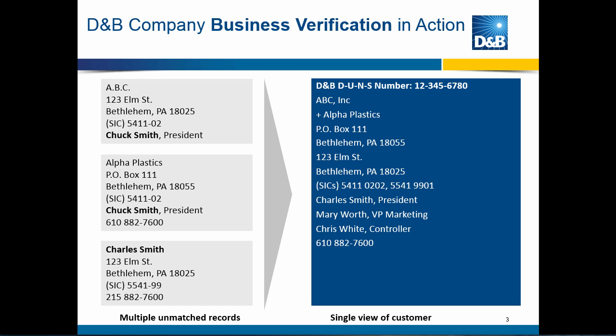If you're not familiar with D&B's offerings, the way business verification works is the analyst provides via Excel some portion of the information. There are some fields that are required — company name and a couple other things. And then the D&B Business Verification Service does a lookup and completes the record, associates a D&B number, and can also identify potential duplicate records to give a single complete view of a customer.